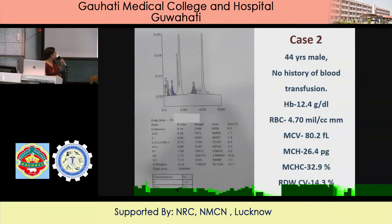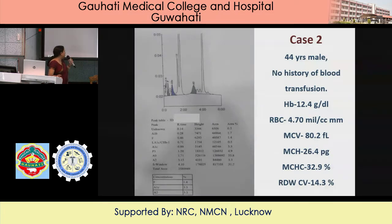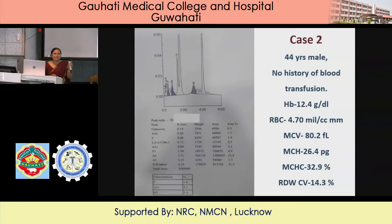RBC is 4.7, MCV 80.2, MCH 26.4, MCHC 32.9, RDW 14.3. F is 1.4, A0 is 53.8, A2 is 3.3, and there is a clear S window with a retention time of 4.1 where the area percentage is 31.7, with normal area count. S window is present at 31.7%, rest everything is normal — so it is sickle cell trait.